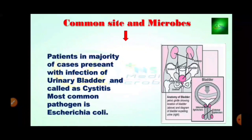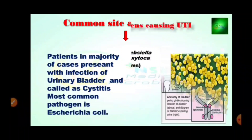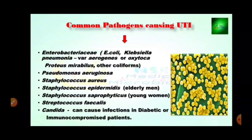The common sites and microbes: patients in the majority of cases present with infection of the urinary bladder. The most common pathogen is E. coli. Common pathogens causing UTI include the Enterobacteriaceae family — the most common microorganisms are E. coli, Klebsiella pneumoniae, Enterobacter aerogenes or oxytoca, as well as Proteus species including Proteus mirabilis and other coliforms, Pseudomonas aeruginosa, and Staphylococcus aureus, which are cocci in shape, also known as gram-positive cocci (GPC).